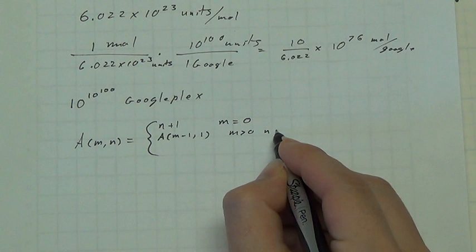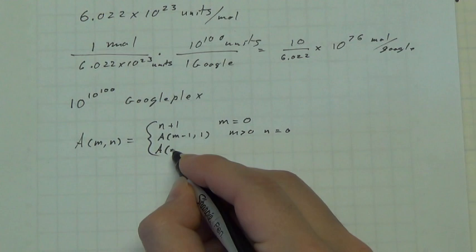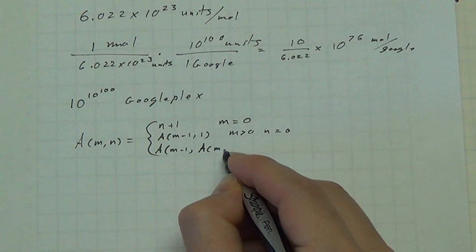And otherwise, it's the Ackermann function m minus 1, and the Ackermann function m, n minus 1. Alright,